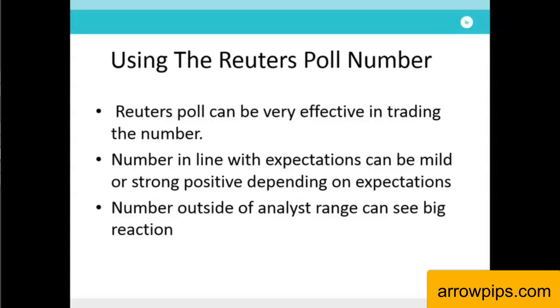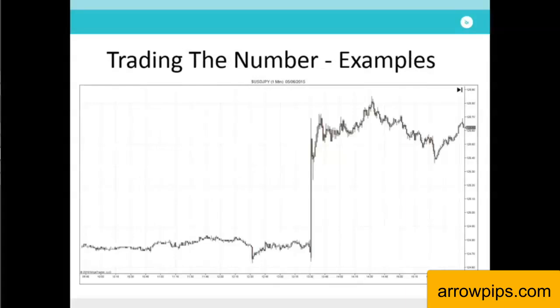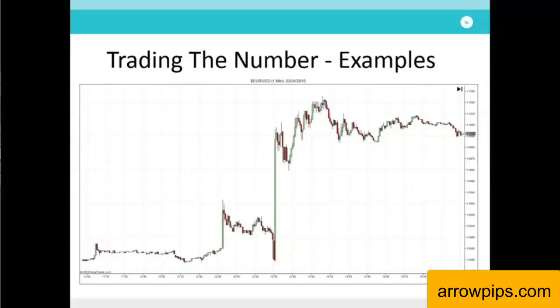Let's look at some examples. The actual NFP release here was 280k against the expected 225k and the previous 223k, with a Reuters poll range of 140k to 350k. We can see that the number strongly beats market expectations and was in the very top of the forecast range, causing dollar yen to jump over 100 pips in a minute.